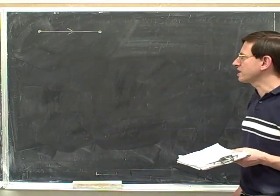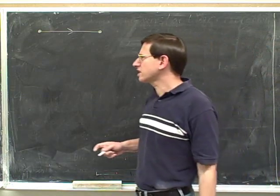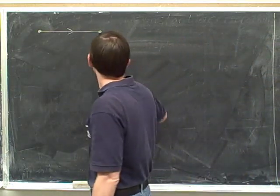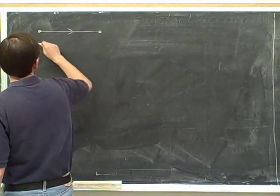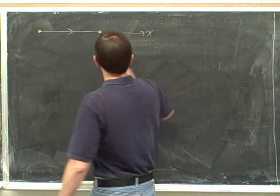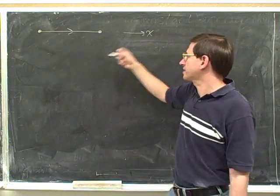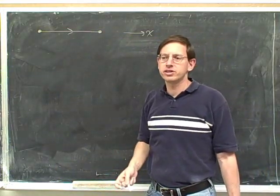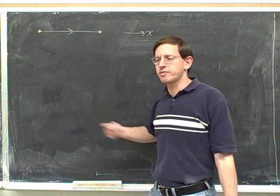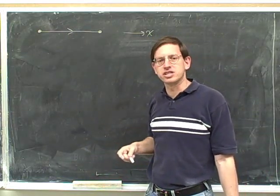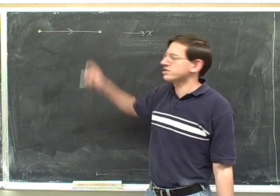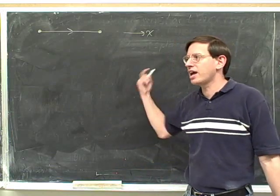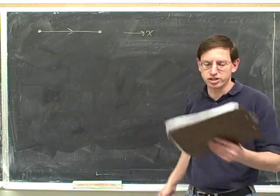The next step is to choose your axes. This is going to be an example of one-dimensional motion, so we really only need one axis — we might call that our x-axis, parallel to our path. How did I know the path was horizontal? I don't. If you're not given extra information, you can make whatever assumption is most convenient. It's convenient to call that the x-axis. I'm not going to bother drawing the y-axis since this is one-dimensional motion.